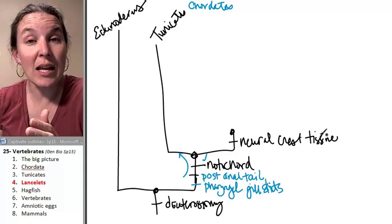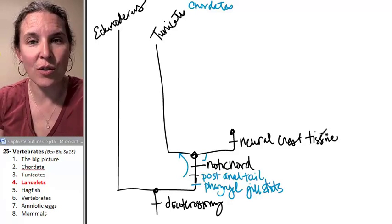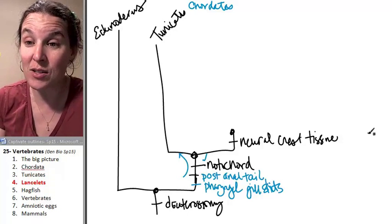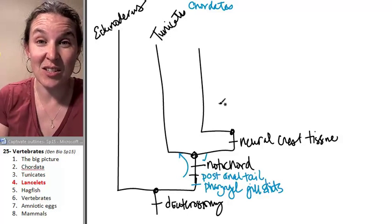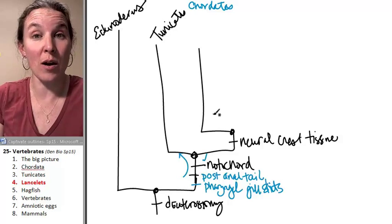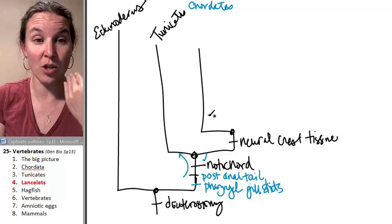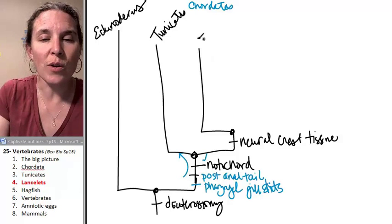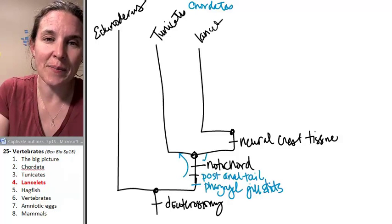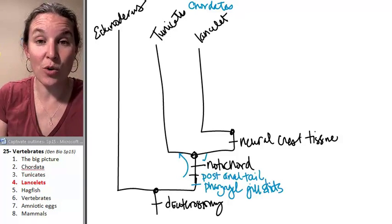And tunicates and everybody beyond have neural crest tissue, and they think that, I mean, it's a pretty hot area of research, and they think that there's some cool stuff that comes from neural crest tissue in terms of how vertebrate brains work. So the critter that comes off is the lancelet, and I'm going to show you a picture of it.